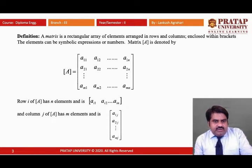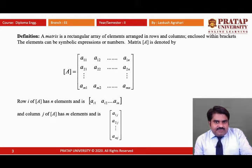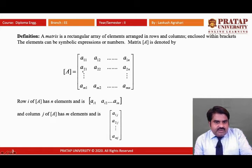Now, the definition of a matrix: a matrix is a rectangular array of elements arranged in rows and columns, enclosed within brackets. The elements can be symbolic expressions or numbers. The matrix is always denoted by capital letters. In a given matrix, the elements are A11, A12, up to A1N — these are the elements of the first row.